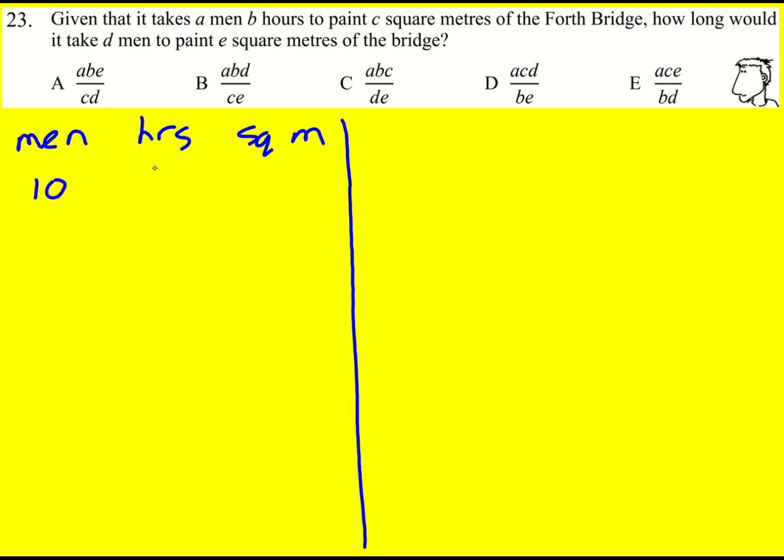Let's say it takes 10 men 4 hours to do 20 square meters, and we might be asked to work out how long it would take, say, 8 men to do 40 square meters.